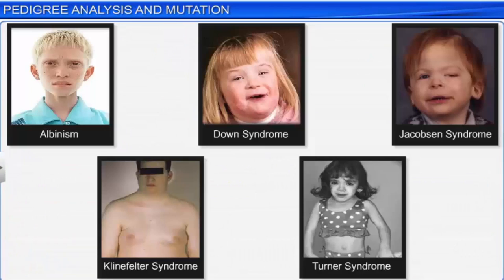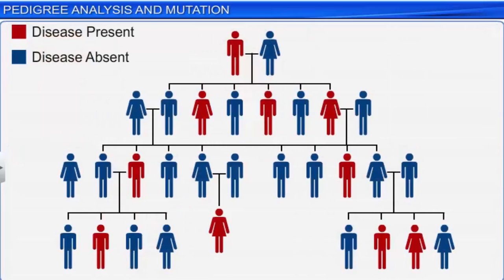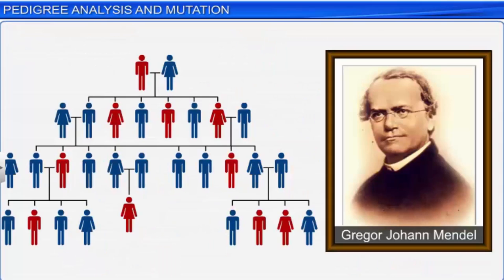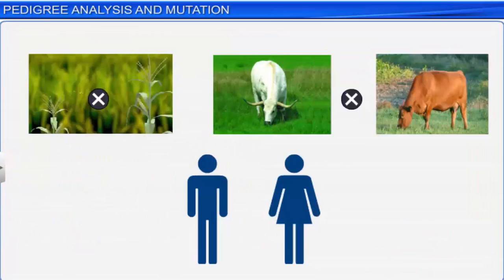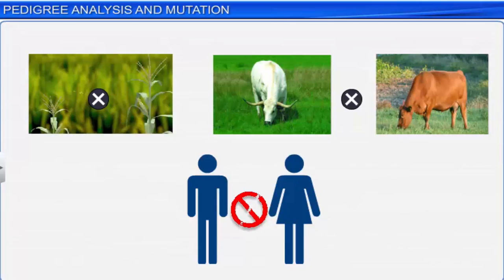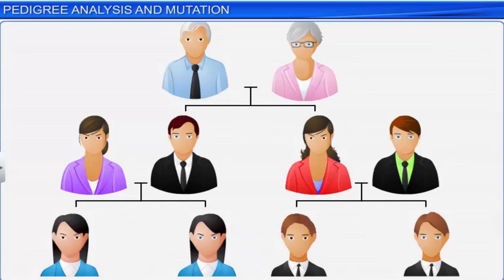A hereditary disorder is a condition that is genetically passed on to one's offspring. For a long time, human beings have been aware that certain disorders are passed on from one generation to another. It was primarily after the rediscovery of Mendel's work that studies pertaining to the inheritance pattern of traits in human beings began. Since controlled crosses in human beings were not possible for scientific and ethical reasons, the only alternative was to study a family's history — known as pedigree analysis — to understand the inheritance of a particular trait.